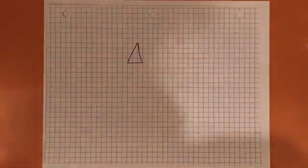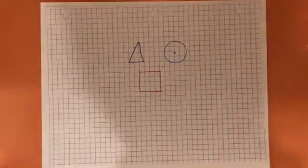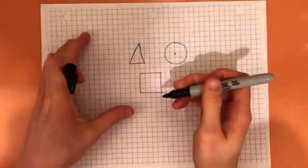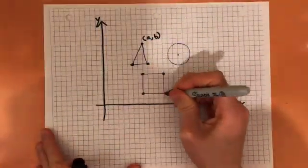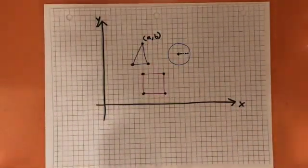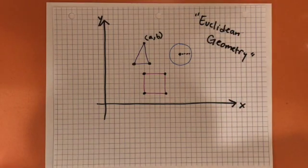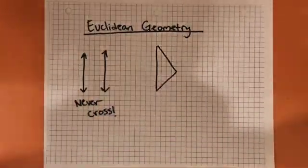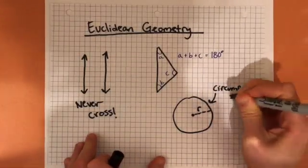Think about the shapes that you're familiar with — triangles, squares, circles. These exist in the flat plane that you've probably learned all about throughout elementary, middle, and even high school. You've got a standard set of x and y axes and each shape can be described by a set of x and y coordinates. This standard type of geometry is called Euclidean geometry. It's home to most of the concepts you're probably familiar with: parallel lines never cross, the angles of a triangle add up to 180 degrees, and the circumference of a circle is 2 pi times the radius.